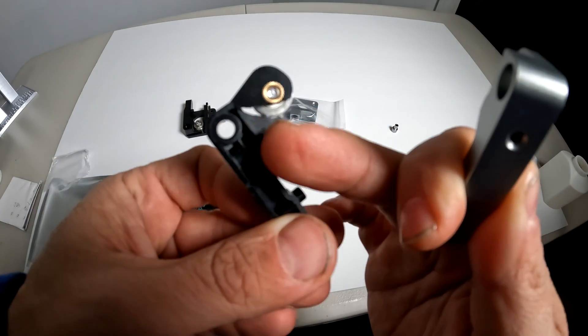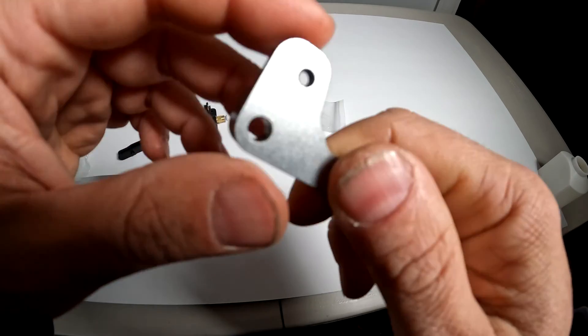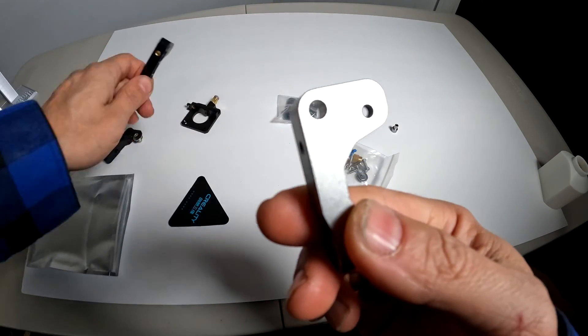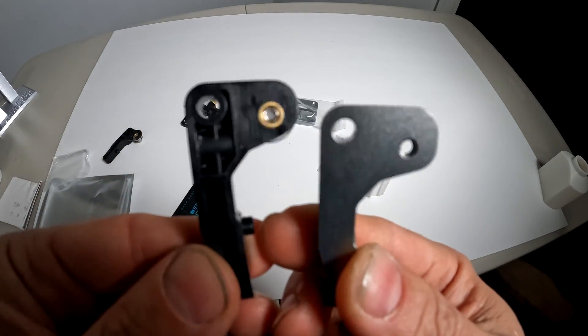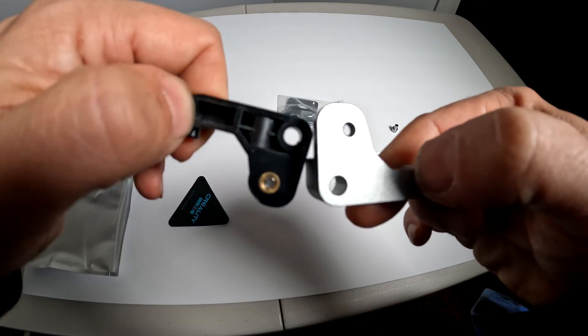This is the broken section on the plastic extruder and this is what it looks like on the metal one and of course this is what it looks like on an intact non-broken plastic one.